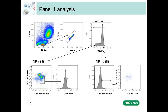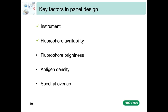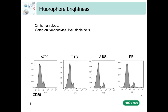We should try and improve our panel by looking at other panel design parameters. So far, we have looked at the instrument and fluorophore availability, but nothing else — we basically just picked what we could find. The next step is to take fluorophore brightness into account. Normally, one ranks fluorophore brightness from 1 to 5, or from very weak to very bright. Looking at the histogram plot on this slide, we can see lymphocytes from human blood stained with different fluorophores, which tells us that our decision on which fluorophores to use will affect the outcome of our analysis, giving better or worse separation depending on their brightness.